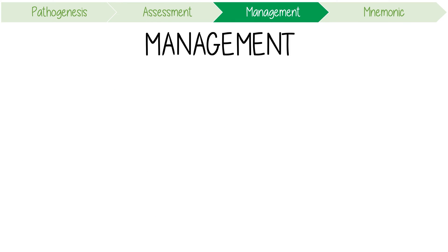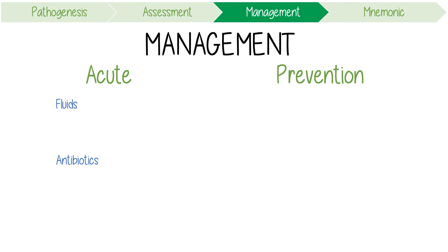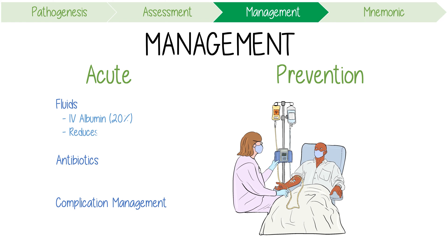The management of SBP should include acute treatment and prevention. In the acute setting, consider early resuscitation with fluids, empiric antibiotic use, and management of other complications of cirrhosis. Fluid resuscitation is important, especially if the patient has features of sepsis. You should also consider intravenous albumin at 20%, which reduces the rate of kidney injury and improves survival. Antibiotics should always be based on your local guidelines; in Australia, ceftriaxone 2 grams IV daily is often used empirically.